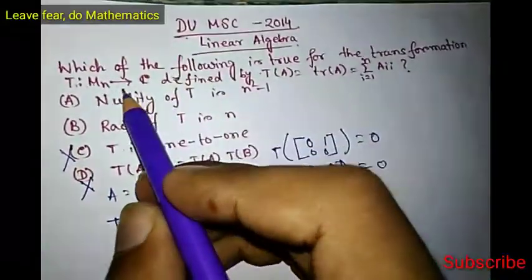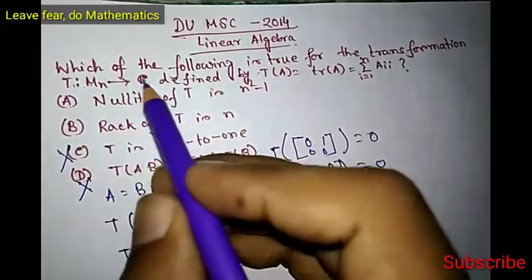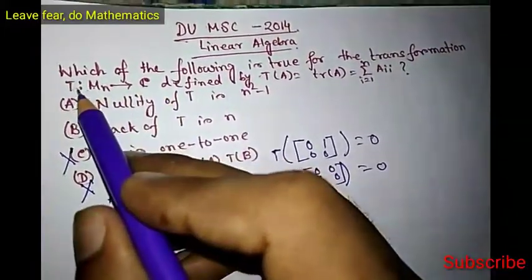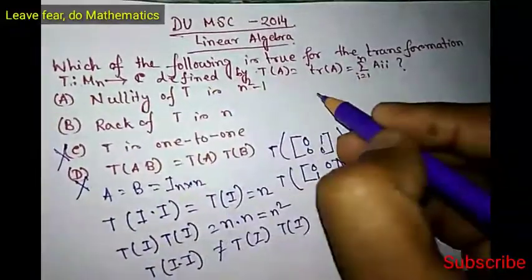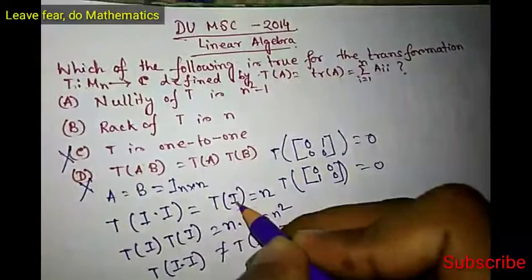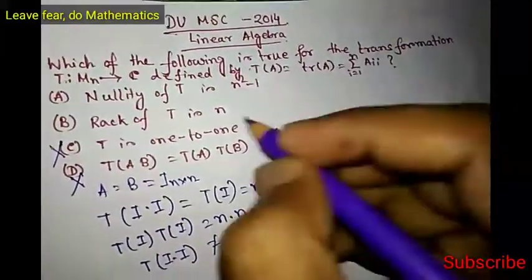When will the rank of T be 0? If T is a zero linear transformation, that is, it maps every vector to the zero vector. But is it true? No, it is not true, because take the identity matrix. T maps the identity matrix to n, which is not equal to 0.